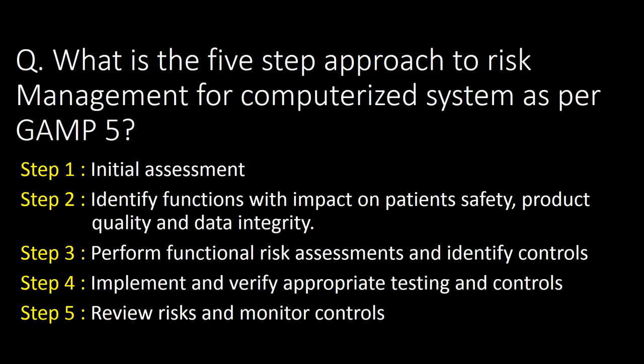What is the five-step approach to risk management for computerized systems as per GAMP-5? Step 1 is initial assessment. Step 2 is to identify functions with impact on patient safety, product quality, and data integrity. Step 3 is to perform functional risk assessment and identify controls. Step 4 is to implement and verify appropriate testing and controls. Step 5 is to review risk and monitor controls.